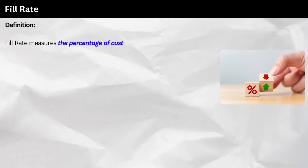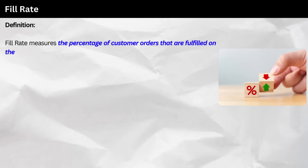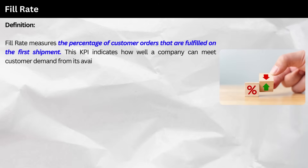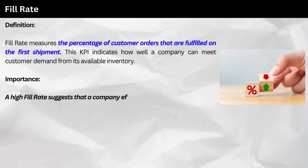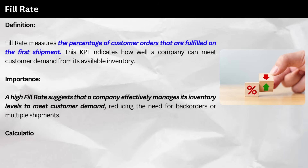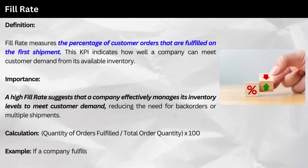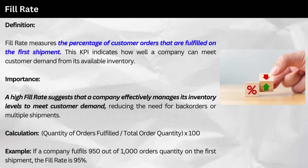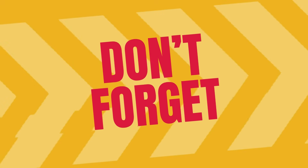10. Fill Rate. Definition: fill rate measures the percentage of customer orders that are fulfilled on the first shipment. This KPI indicates how well a company can meet customer demand from its available inventory. Importance: a high fill rate suggests that a company effectively manages its inventory levels to meet customer demand, reducing the need for backorders or multiple shipments. Calculation: as follows. Example: if a company fulfills 950 out of 1,000 order quantities on the first shipment, the fill rate is 95%. That's a wrap on today.